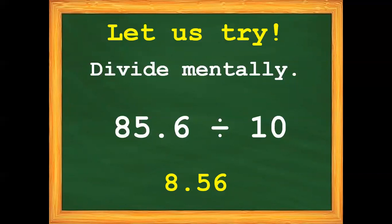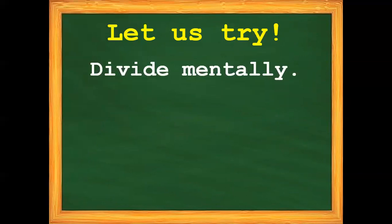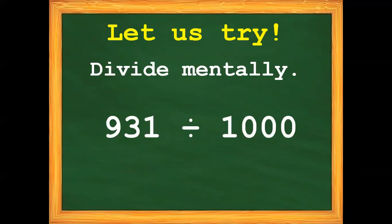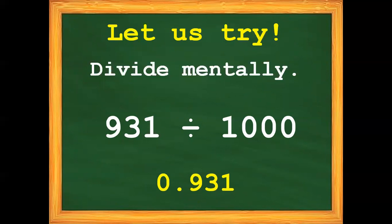Let us proceed to number 2. Divide mentally without using pen and paper. We have 931 divided by 1,000. The correct answer is 0.931. Did you get the same answer? Great!